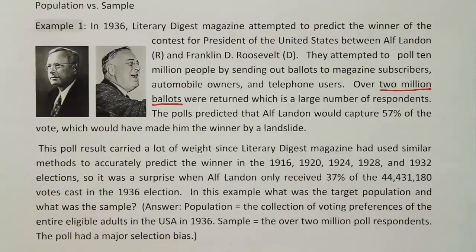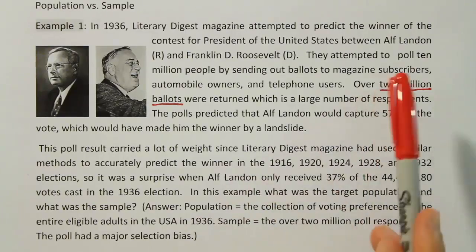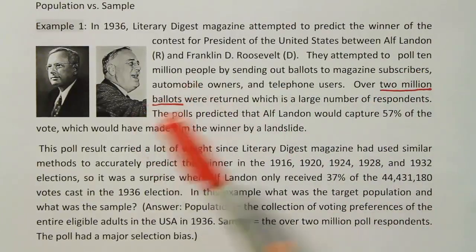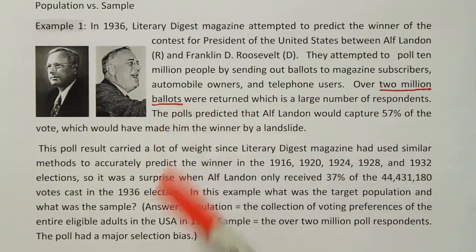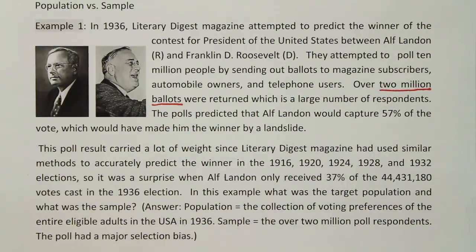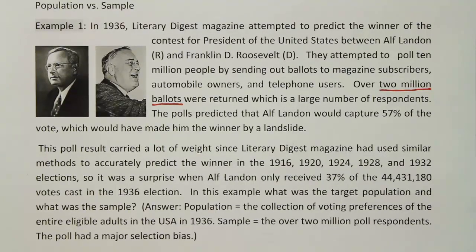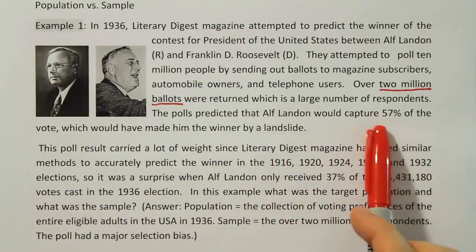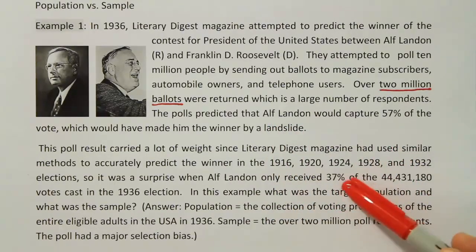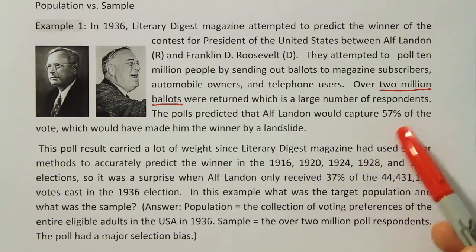In order to do that, they actually sent out polls to 10 million people, but they only received back 2 million ballots. So basically their sample is the 2 million ballots that were sent back. And then, of course, we know famously that this poll was incorrect, since Alf Landon was supposed to, according to the poll, capture 57%, and he only received 37%. So instead of winning by a landslide, he lost by a landslide.